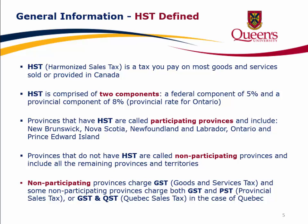Provinces that have HST are called participating provinces and include New Brunswick, Nova Scotia, Newfoundland and Labrador, Ontario, and Prince Edward Island. Non-participating provinces charge GST (goods and services tax), and some also charge PST (provincial sales tax), or GST and QST (Quebec sales tax) in the case of Quebec.